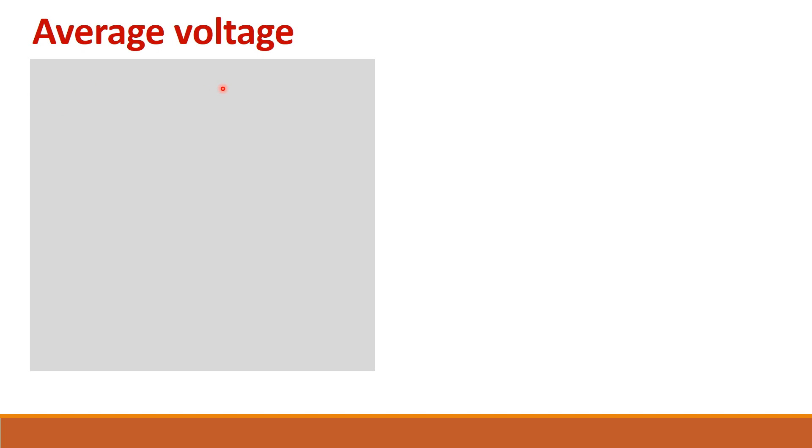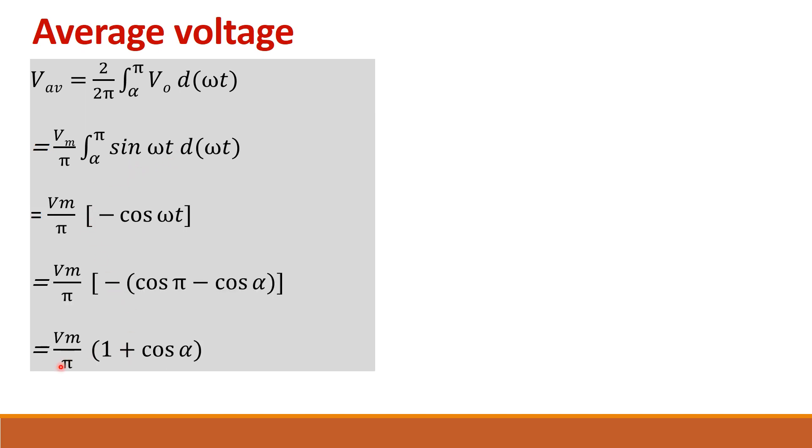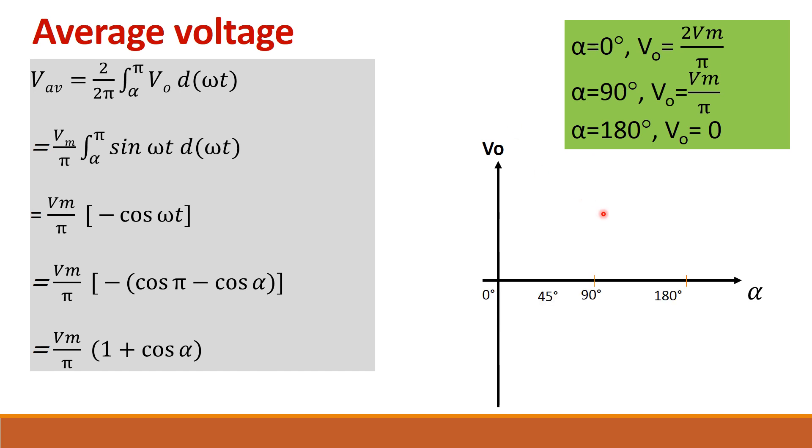Let us derive the average voltage. So V average is equal to 1 by pi alpha 2 pi. You have the output voltage Vm sin omega t. So simplify it you will get Vm by pi into 1 plus cos alpha. So when alpha equal to 0 cos 0 is 1 so your output will be 2Vm by pi. When alpha is 90 degree V0 is this one and alpha equal to 180 degree V0 is 0.